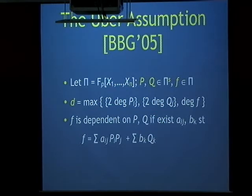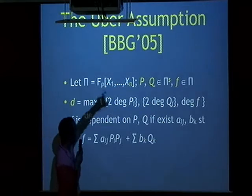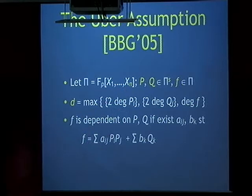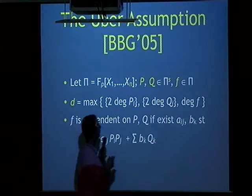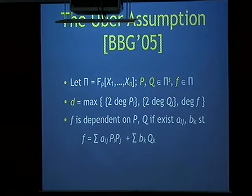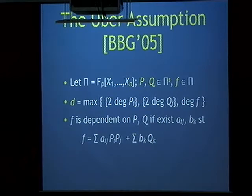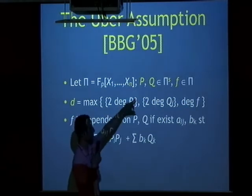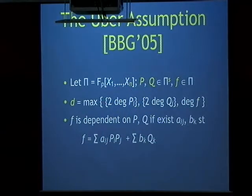Both P and Q are lists of s polynomials. P represents the values the adversary sees in group G, Q represents the values the adversary sees in group GT, and F is the target value the adversary is trying to distinguish from random. We define degree d to be twice the degree of elements in P (from pairing), the degree of elements in Q, and the degree of F — this is the maximum degree the adversary can generate, analogous to degree two in the DDH calculation.